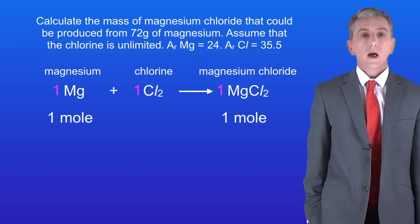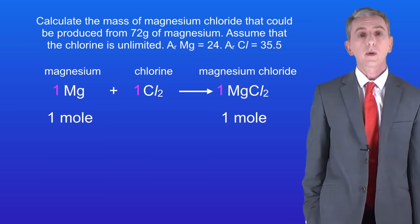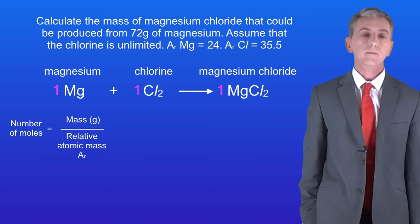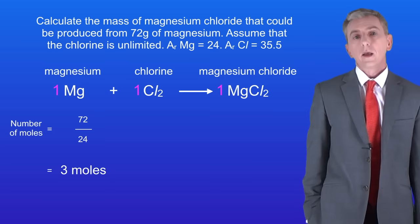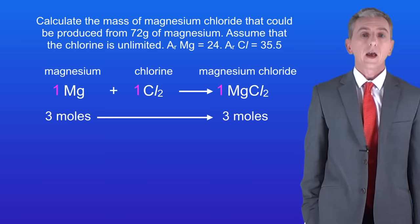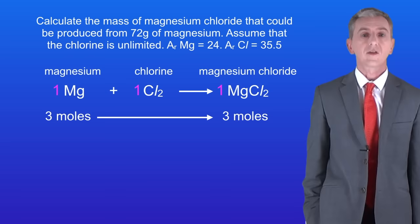The question tells us that we've got 72 grams of magnesium. The first thing we need to do is calculate the number of moles of magnesium. So the number of moles is the mass divided by the relative atomic mass: 72 divided by 24 means that we've got 3 moles of magnesium. Now we know from the chemical equation that 1 mole of magnesium will produce 1 mole of magnesium chloride. Therefore 3 moles of magnesium will produce 3 moles of magnesium chloride.